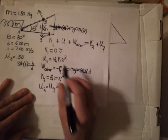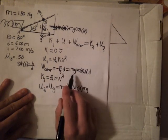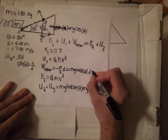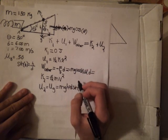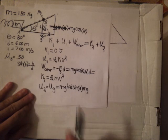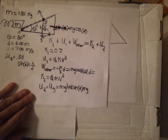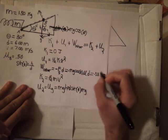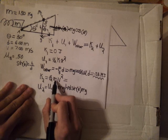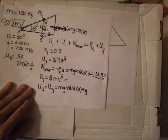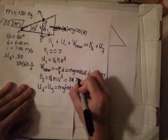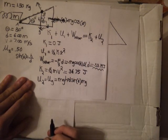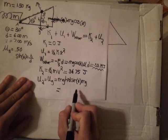Now we have all values defined. We can calculate each term numerically: the work done by friction is negative mg cosine theta times mu times d. Plugging in m = 1.50 kg, g = 9.8, theta = 30°, mu = 0.50, and d = 6.00 m, that equals negative 38.19 joules. The kinetic energy at point 2 is one-half mv squared, which equals 36.75 joules. The gravitational potential energy at point 2 equals mgd sine theta, which equals 44.1 joules.